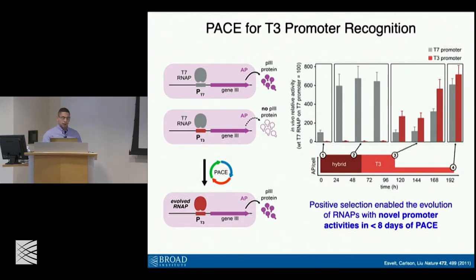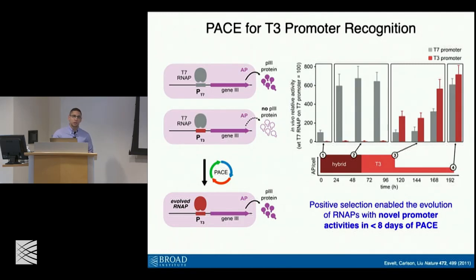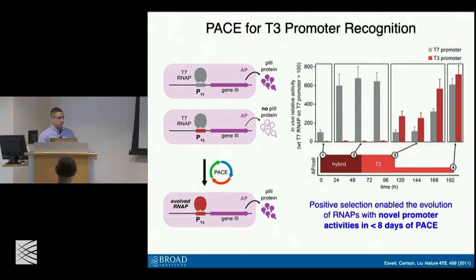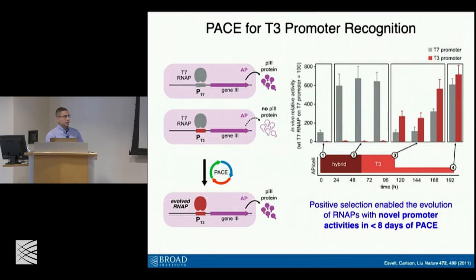PACE enabled the evolution of RNA polymerases with novel promoter activities over the course of about eight days. Looking at this data, one point that might stand out is the length of this evolutionary trajectory. This is particularly relevant because we know the number of mutations required to access this activity turns out to be exclusively three mutations. So if you take T7 RNA polymerase and make those three mutations, you get these levels of activity. Why are eight days required? From a synthetic biology perspective, we might also want these biomolecules to be orthogonal. The promiscuity of the resultant products — the T7 RNA polymerase variant can still initiate transcription on the T7 promoter quite efficiently — may be undesirable.